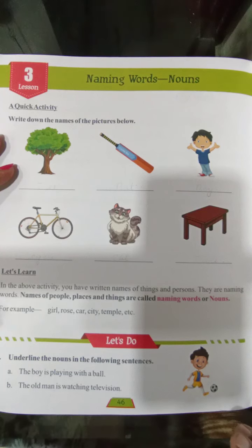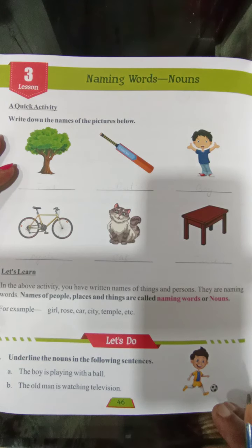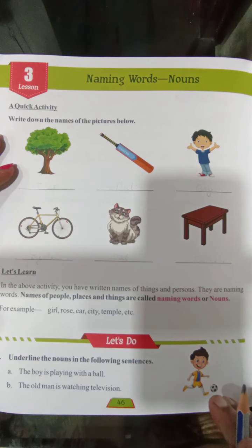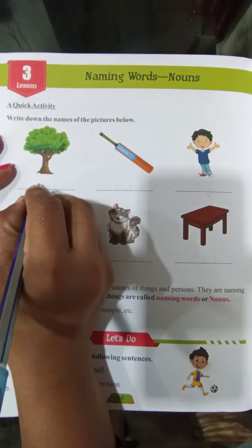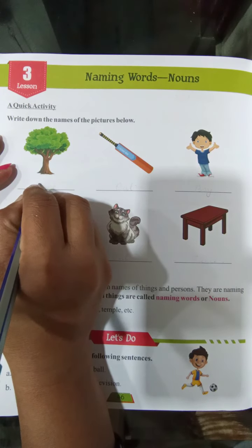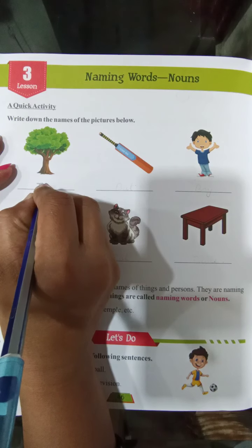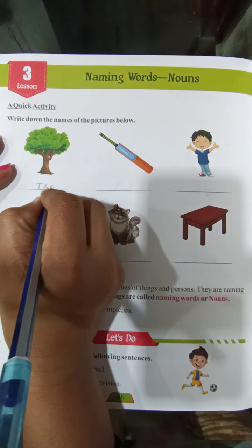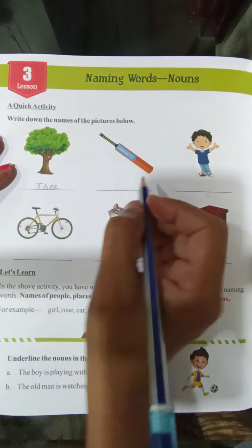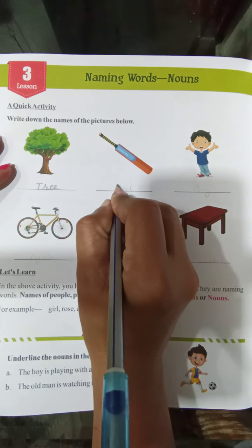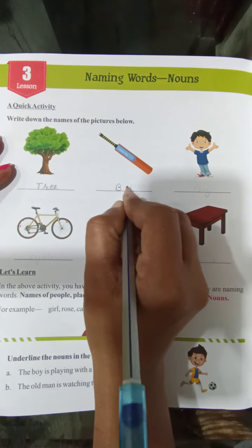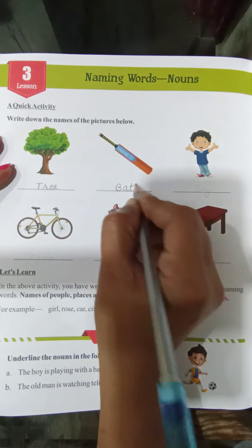Here a quick activity is given: write down the names of the pictures below. This is the picture of a tree, so write here tree — T-R-E-E. This is the picture of a bat, write here B-A-T, bat.